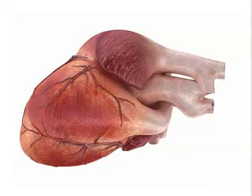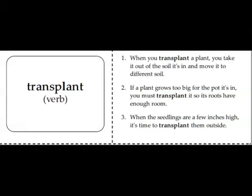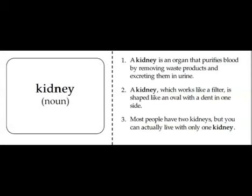So far you've learned that cells form tissue, and today you're going to hear about what tissue forms. Before we begin reading our story today called 'Organs,' let's take a look at a few vocabulary words. The first one is 'collapse' — collapse means to fall or to cave in. The next word is 'transplant' — transplant means to move something from one place to another.